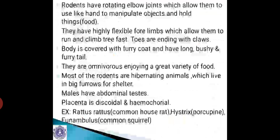Rodents have rotating elbow joints which allow them to use their forelimbs like hands to manipulate objects and hold food. They have highly flexible forelimbs which allow them to run and climb trees fast. Toes end with claws, the body is covered with a furry coat, and they have a long, bushy and furry tail. They are omnivorous, enjoying a great variety of food. Most rodents are hibernating animals which live in burrows for shelter.